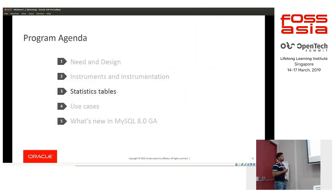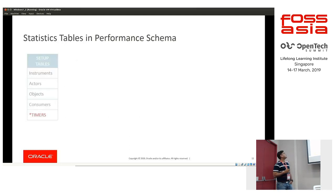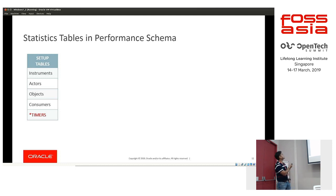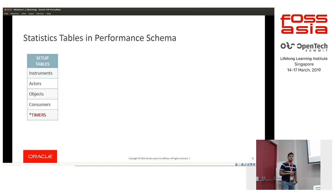Let's look at the statistics tables Performance Schema provides. I've categorized them based on how they are used. The setup tables tell Performance Schema what to collect and how — like the setup_instruments table. We have a setup_actors table to specify which users to collect statistics for, and a setup_objects table to specify which objects, such as which tables, to collect statistics for.